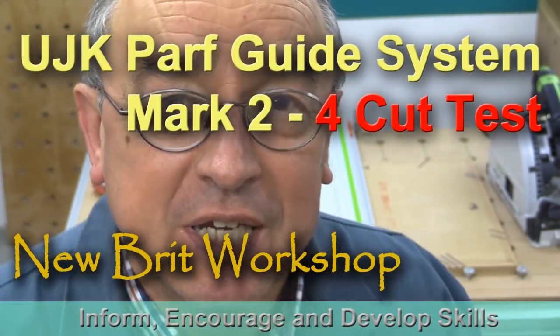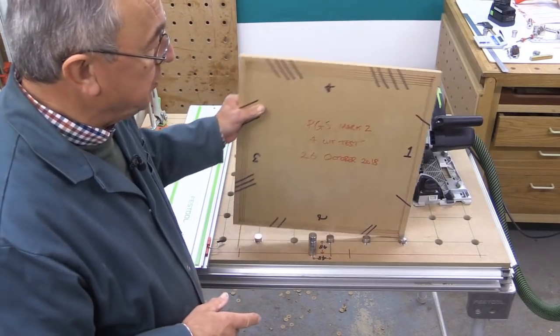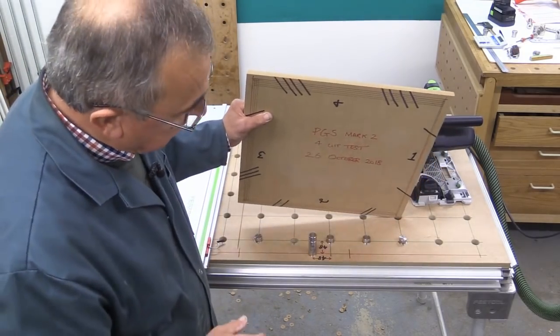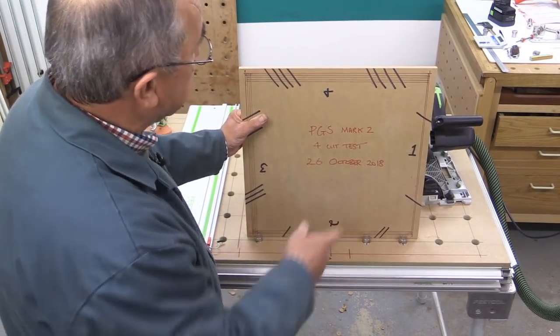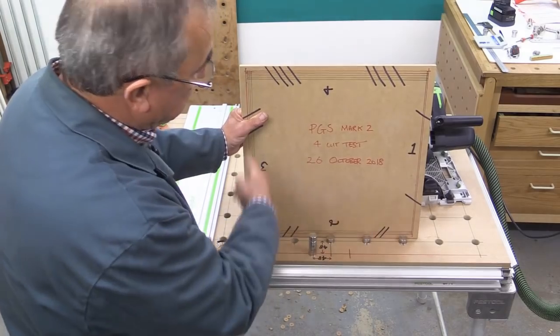This is the four-cut test using the jig that I've recently made using the ParfGuide system Mark II. What I've got here is a piece of MDF. It's just over 12mm in thickness. And I've numbered the sides 1, 2, 3 and 4.